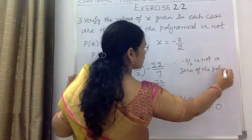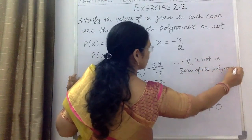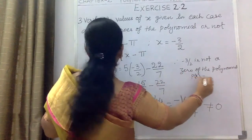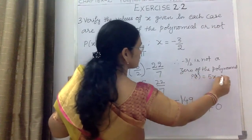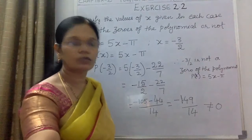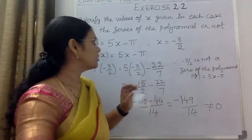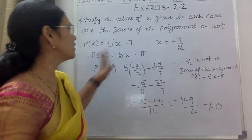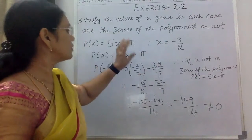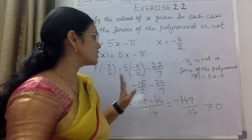What is the polynomial that is given? P(x) = 5x - π. In this case we verified whether the given polynomial, after substitution, gives an answer of 0 or not.